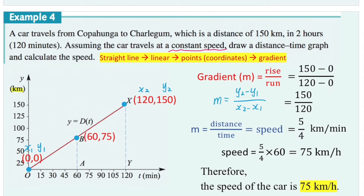Be very careful with the unit. We're measuring distance in kilometers and time in minutes, so the speed unit is kilometers per minute. However, we tend to represent speed in kilometers per hour. To convert 5/4 kilometers per minute into kilometers per hour, multiply by 60 because there are 60 minutes in one hour. So the speed equals 5/4 × 60 = 75 kilometers per hour. We can conclude that the speed of the car is 75 kilometers per hour.